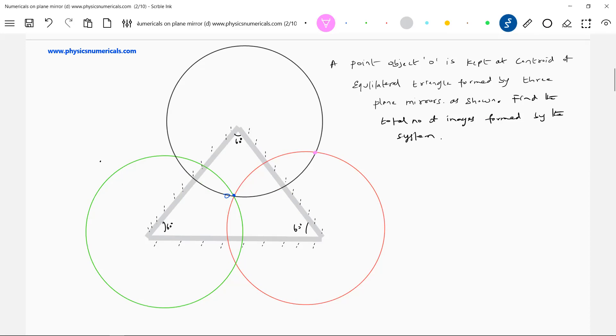This one image. Then if the angle is 60 degrees, then how many images? What happened, we should get five. Five, this object. Another five images should be there.